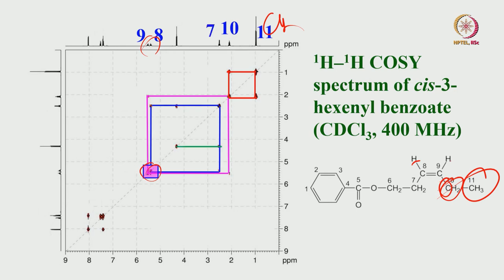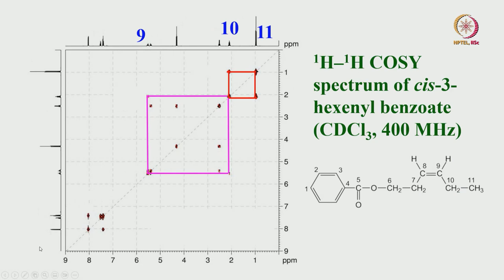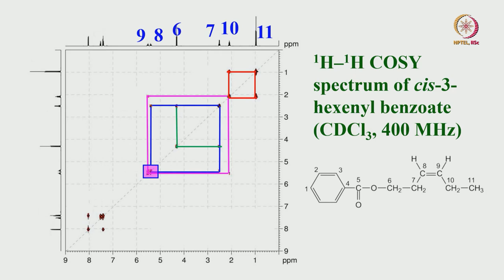From proton 8, go here, complete this square — this is proton 7. There is another diagonal here. Starting with proton 11, you get 10; 10 to 9; 9 to 8; 8 to 7. Complete the square. From the proton 7 diagonal, come down, hit the diagonal, and complete the square — this has to be proton 6. That completely analyzes this group. You can make a safe assignment without any difficulty.